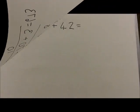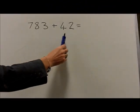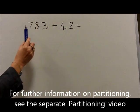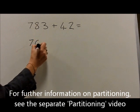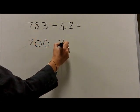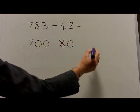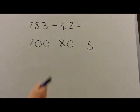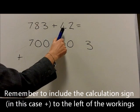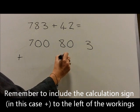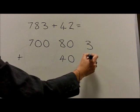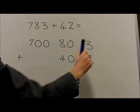With the question 783 plus 42, we partition the 783 into 700s, which are 700, plus 8 10s, which are 80, and 3 units, which are 3. This is then added to the 42, which partitions into 4 10s, which are 40, written in the 10s column, and 2 units, which are 2, written in the units column.